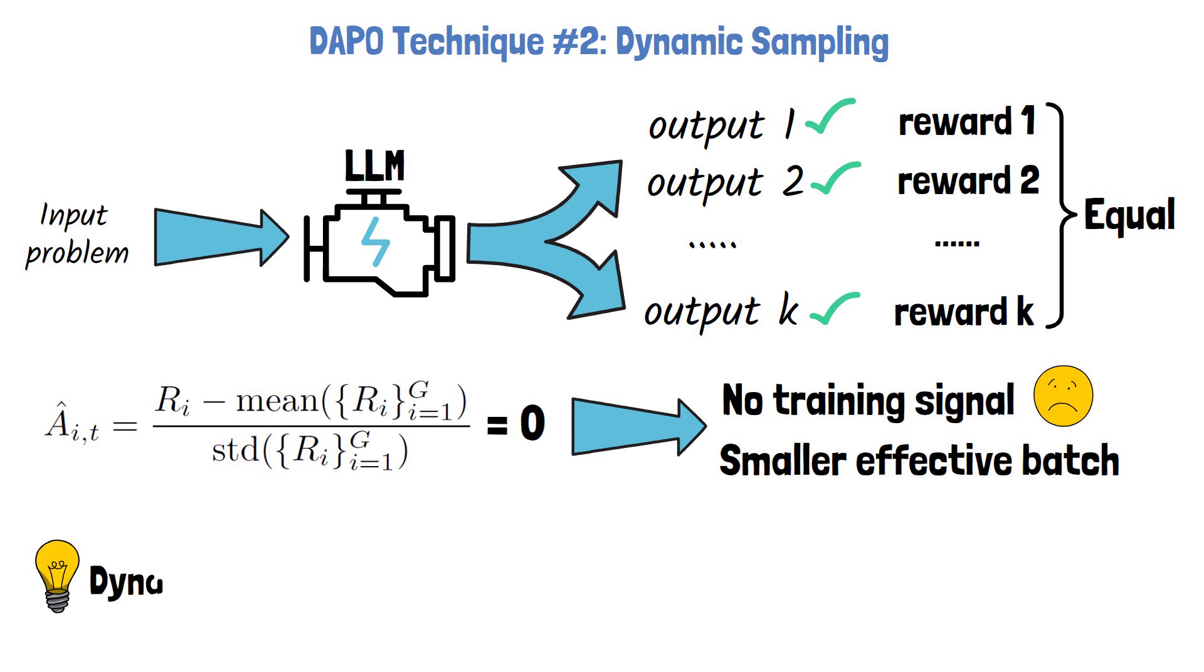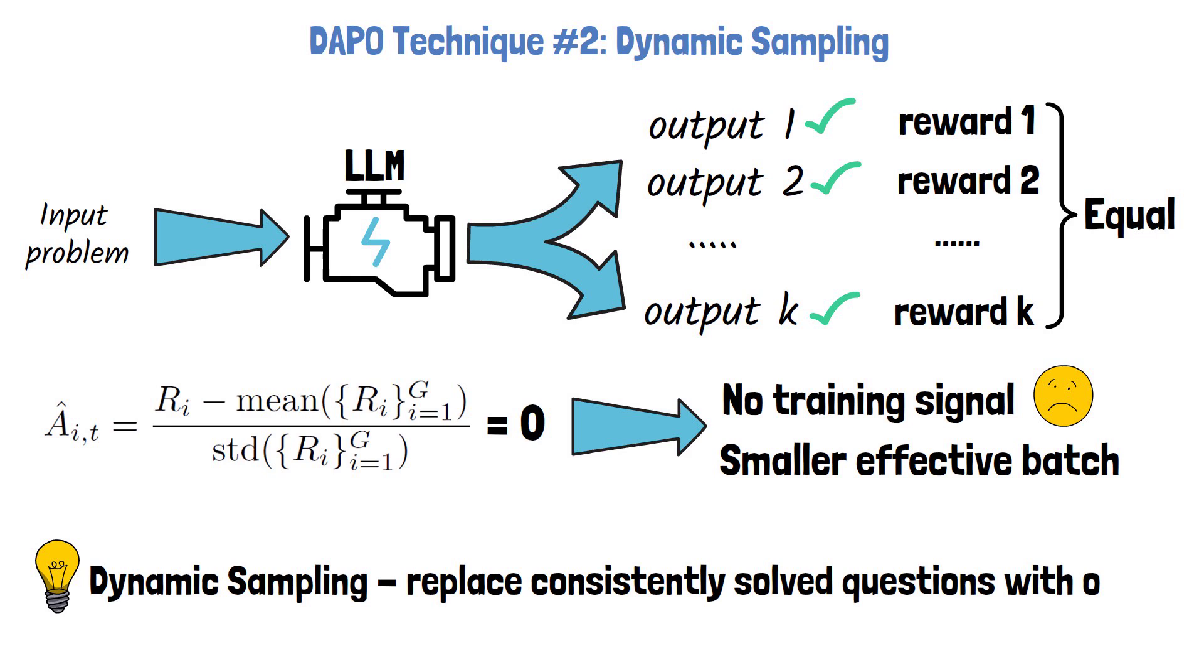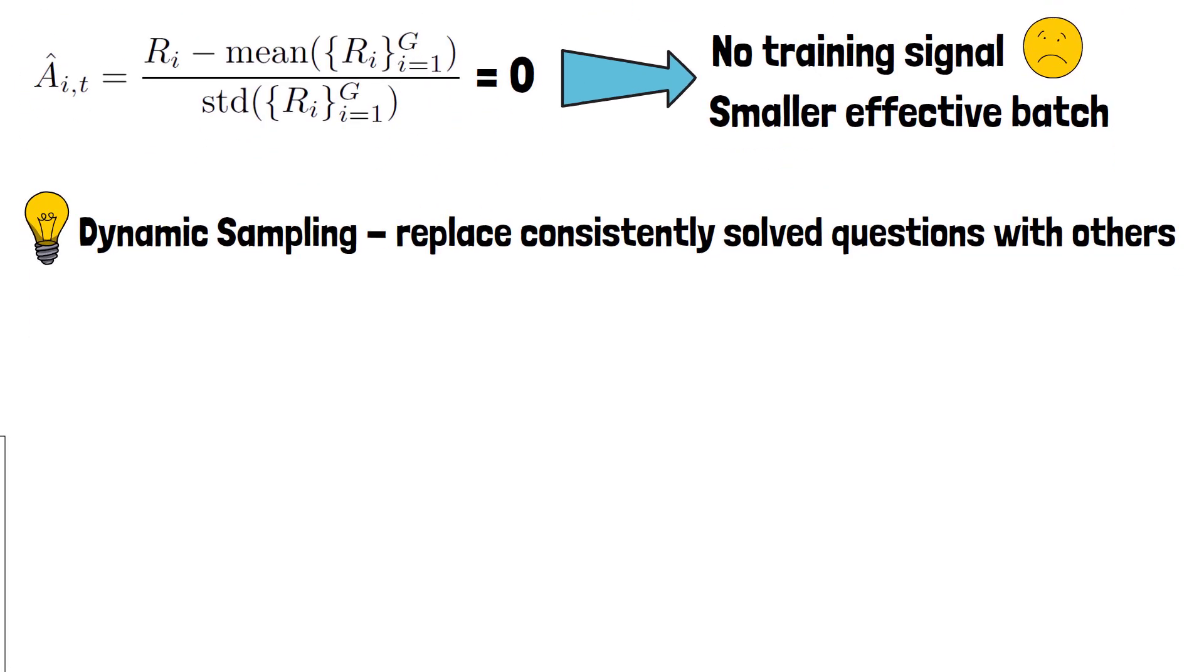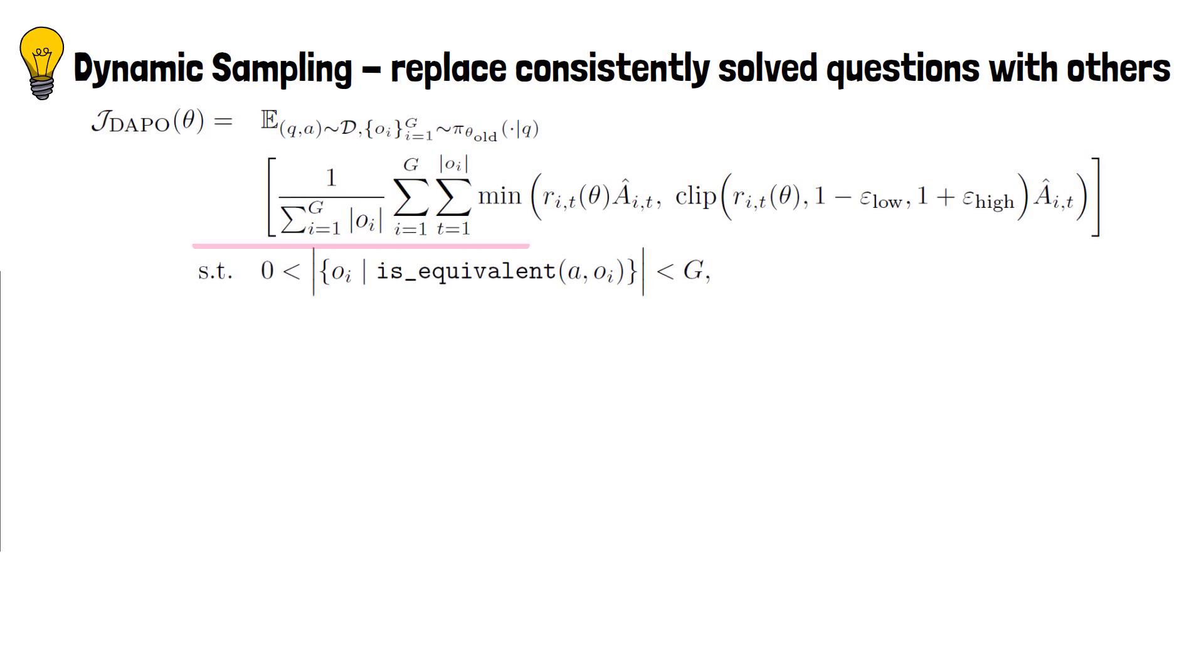To address this, DAPO uses dynamic sampling. If all sample responses for a question are correct, we filter out the question and sample a new one instead, until the batch is full with non-redundant questions. Going back to the objective, here is the part that represents dynamic sampling requires that each sample is not consistently solved. Similarly, we also filter out consistently unsolved questions.